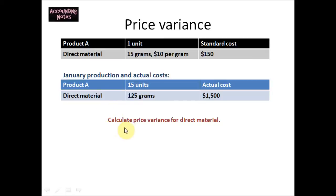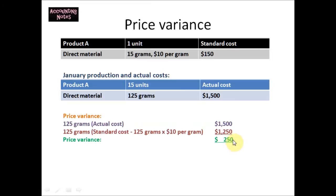So we need to calculate the price variance for direct material. Let's get started. In order to calculate the price variance, the first step is to record the actual cost. 125 grams were used and the actual costs that occurred were $1500.